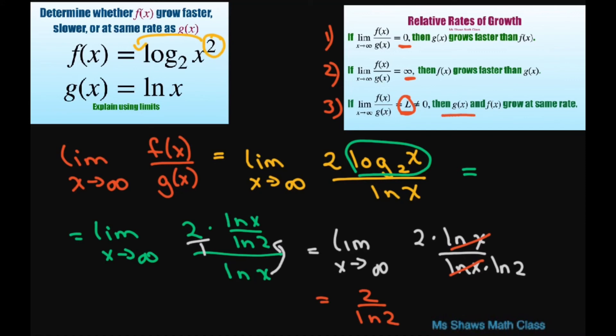So that means that g of x and f of x grow at the same rate. You would say that f of x grows at the same rate as g of x, so it's number 3. Thank you, have a nice day.